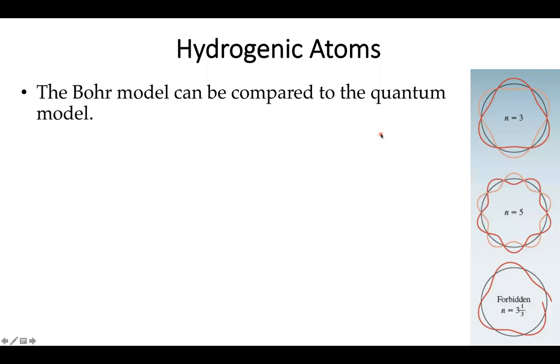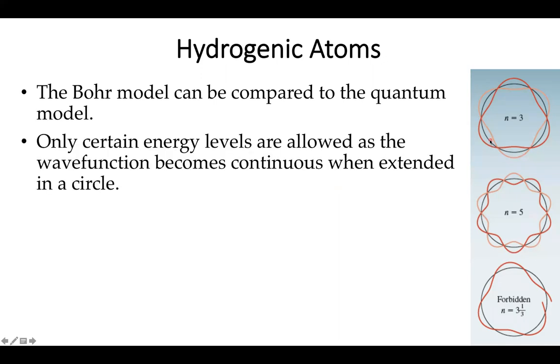We can imagine an electron moving around in a circular path around a nucleus. Using the Bohr model as a starting point, the reason why very specific energy levels are allowed is because these are the only ways I can have a continuous wave function.